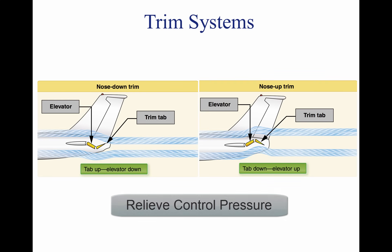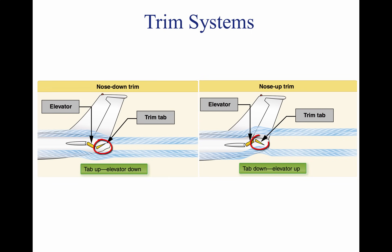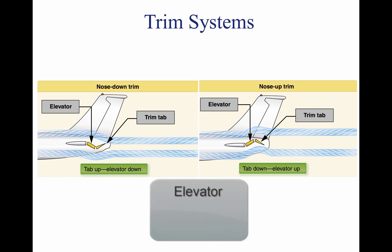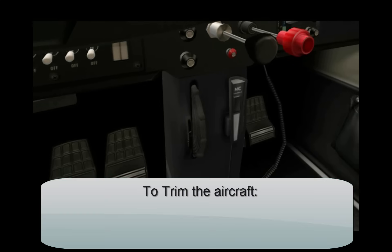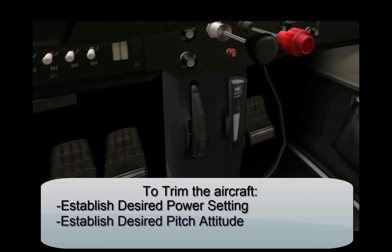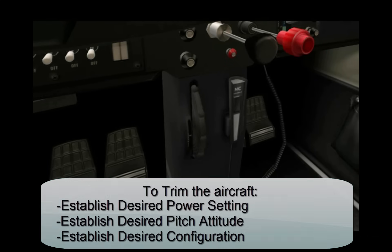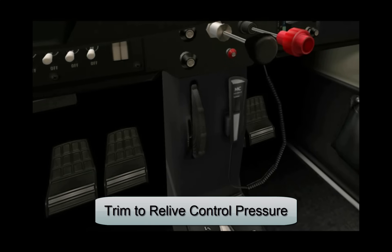Trim systems are used to relieve the pilot of the need to maintain constant pressure on the flight controls, and usually consist of controls in the airplane and small hinged devices attached to the trailing edge of one or more of the primary flight control surfaces, such as the elevator, rudder, and ailerons. In small aircraft, they are usually manually controlled by a small vertically mounted control wheel that moves the trim tab on the elevator, causing the plane's nose to pitch up or down. The pilot typically establishes a desired power setting, pitch attitude, and configuration, then trims the controls to relieve the pressure required.